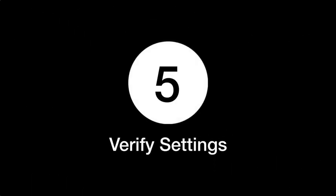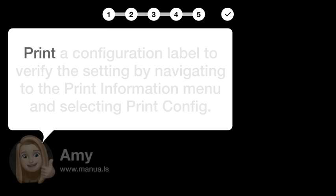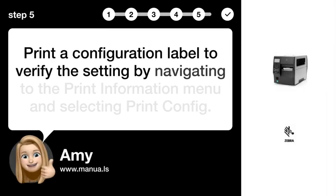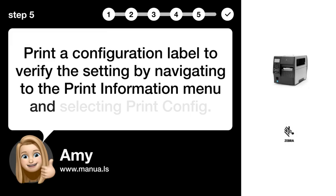Step 5: Verify Settings. Print a configuration label to verify the setting by navigating to the Print Information menu and selecting Print Config.